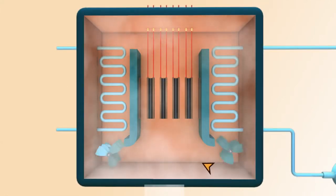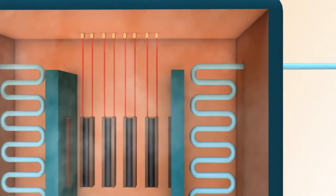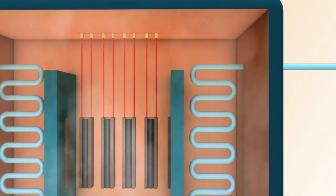Gas flows through the coolant channels between the graphite blocks. As the gas moves up through the core, it gets heated up and leaves the top of the core at a high temperature and enters the steam generator.